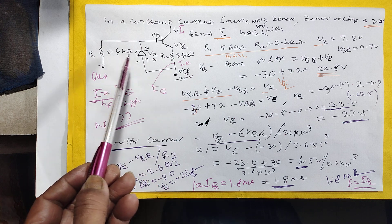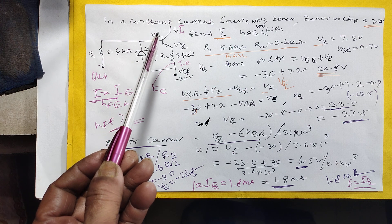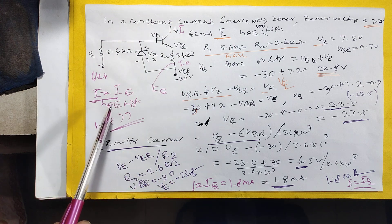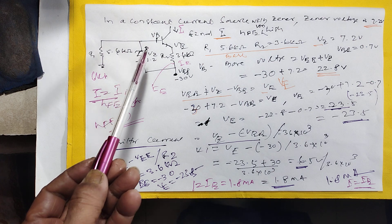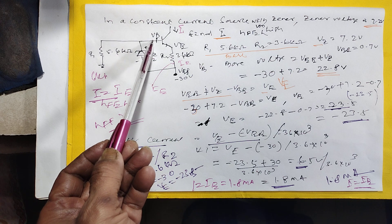This R1 is 5.6 kilo ohm, R2 is 6.6 kilo ohm. The VE is minus 30 volt. And you have to calculate this one. Here HFE is high, that means IC is equal to IE. Because HFE is high, so what we have to do first is calculate VB.